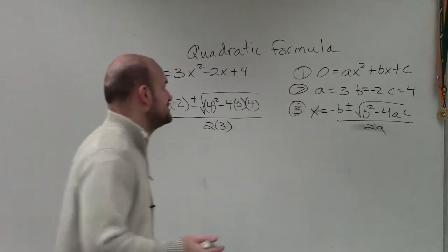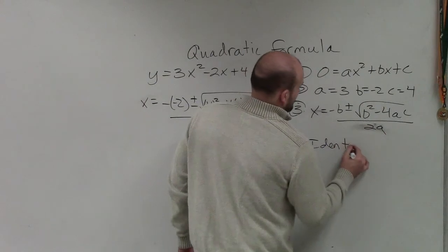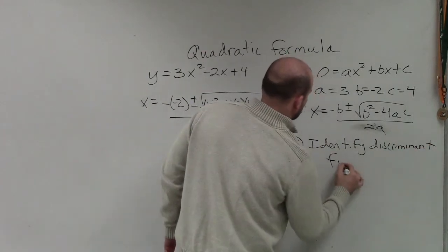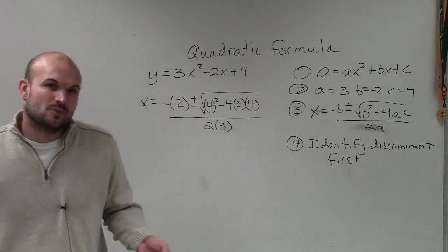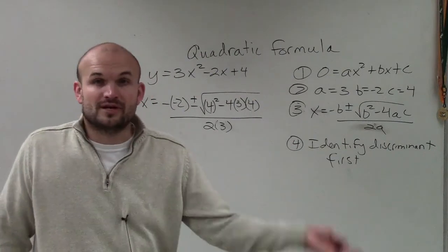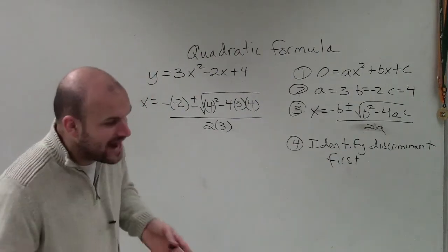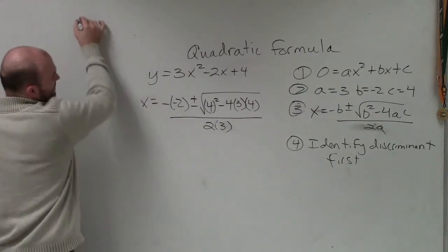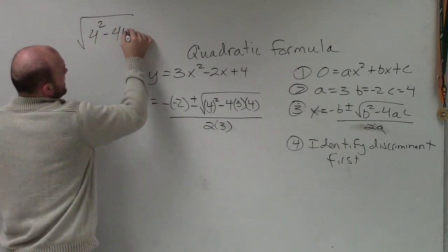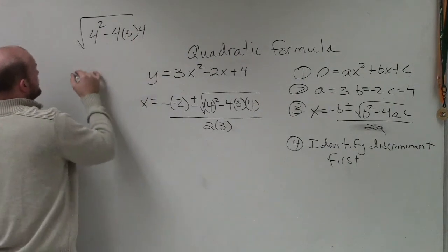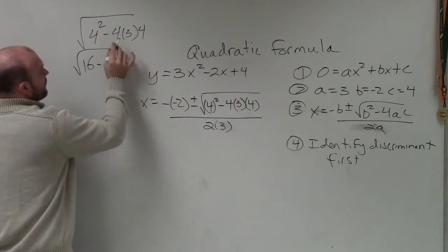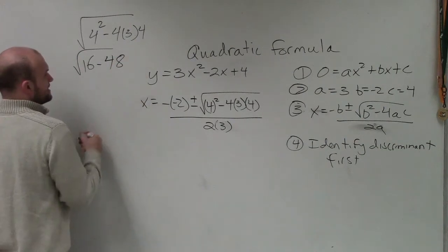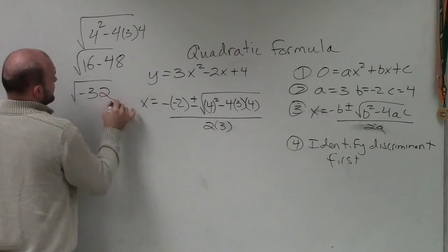What I like to do is identify the discriminant first. Identifying the discriminant tells us what type of solutions we'll have — 1 real, 2 real, irrational, or no solutions at all. So I evaluate inside first: 4 squared minus 4 times 3 times 4, which gives 16 minus 48, giving a negative 32.